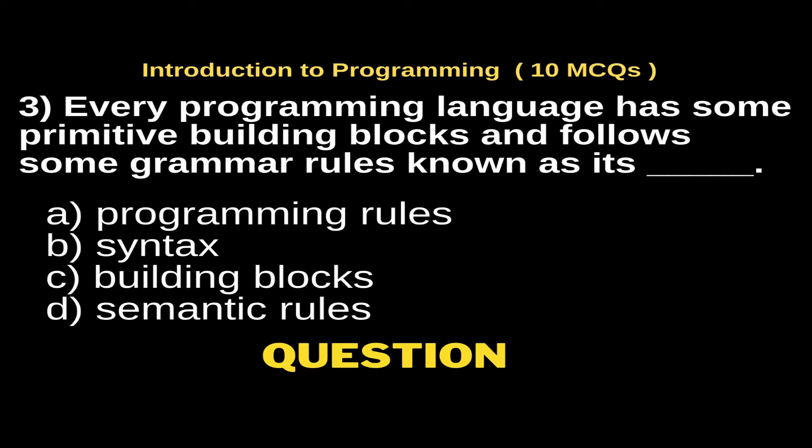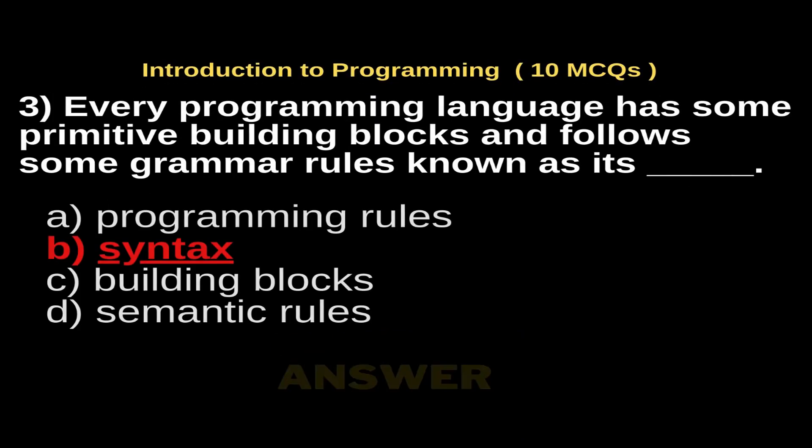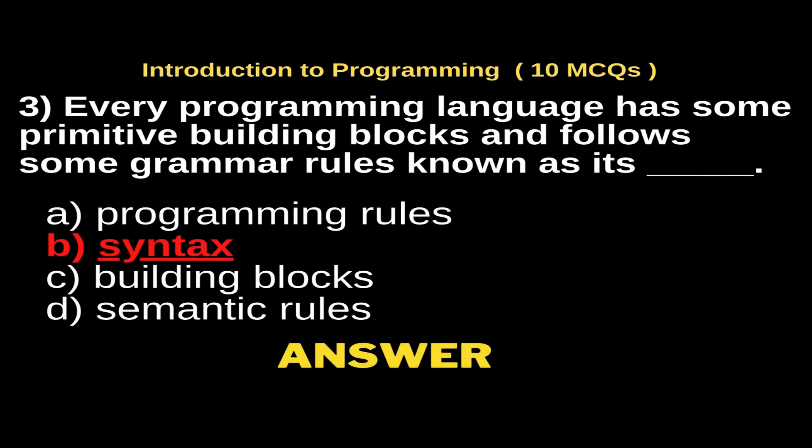Every programming language has some primitive building blocks and follows some grammar rules known as its dash. Options: Option A, programming rules; Option B, syntax; Option C, building blocks; Option D, semantic rules. And the right answer is Option B, syntax.